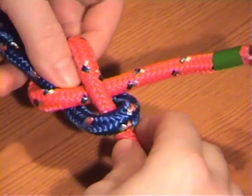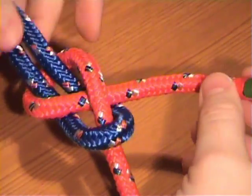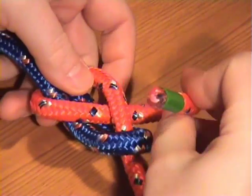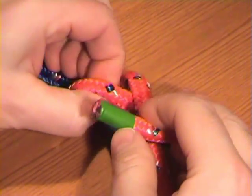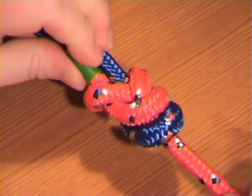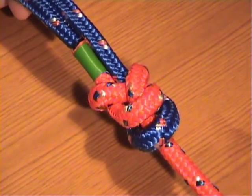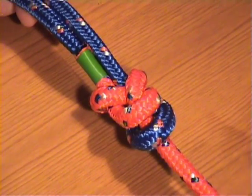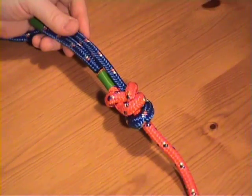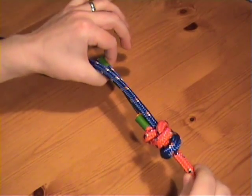What we do here is you form the sheet bend as normal, but then you take the working end under itself one more time. Just tuck it under there. So now you can see that both ends of the sheet bend are facing the same direction and there's nothing to get snagged.